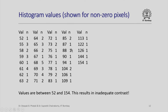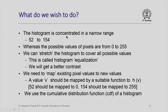Imagine if this poor contrast was to be removed — what we must do is somehow stretch the histogram which is concentrated in a narrow range between 52 and 154, because the possible pixel values are 0 to 254. If we can stretch the histogram such that it covers all possible values, then we might get a picture with better contrast. This process is called histogram equalization.